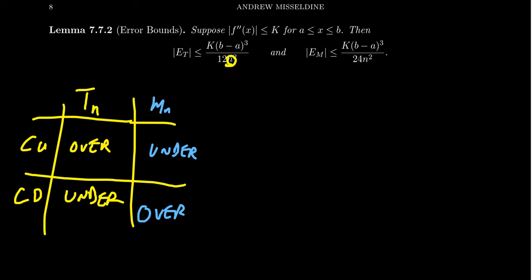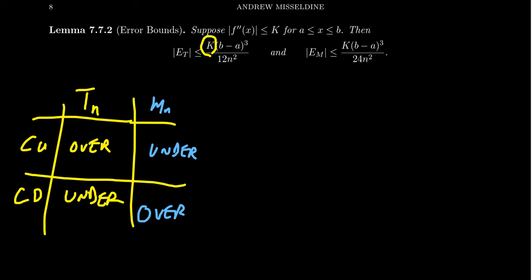This error bound means the error can never be worse than this value. The reason this error bound is useful is that if we can force the error bound to be small, that will force the actual error to be small as well. So even if we don't know what the actual error is, we can guarantee it is small by making the error bound small. The only difficulty is choosing an appropriate value of k, and we typically want k to be as small as reasonably possible, because the smaller k is, the smaller the value of n we need.